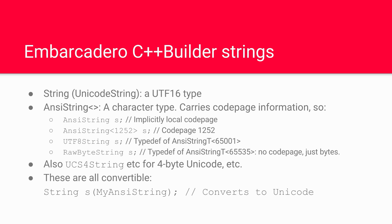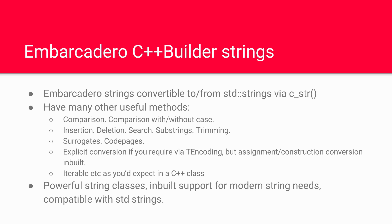As well as String (Unicode) and ANSIString, we have UCS4String and other types for different kinds of Unicode. One of the key, really useful things here is that these are all easily convertible. So String S, constructed with an ANSIString, just converts it to Unicode, and it just works and handles it correctly. These string types are also convertible to and compatible with the standard library strings — easily convertible via c_str(). They have many other useful methods for comparison with and without case, sorting, insertion, deletion, search, substrings, trimming, handling surrogate characters, and examining code pages. You can do explicit conversion via the TEncoding class, but assignment or construction conversion is inbuilt.